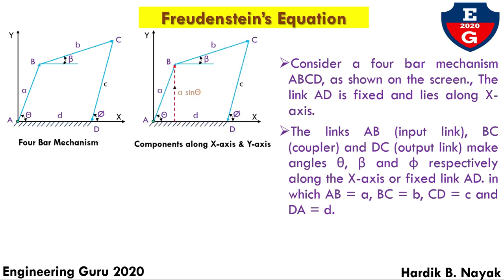The term AB can be resolved into two components: one horizontal component and one vertical component. The horizontal component will be directed toward the right-hand side and the vertical component will be in the upward direction. So the horizontal component of AB will be A cos theta and the vertical component will be A sin theta. Similarly, vector BC can be resolved into components: horizontal component B cos beta and vertical component B sin beta.